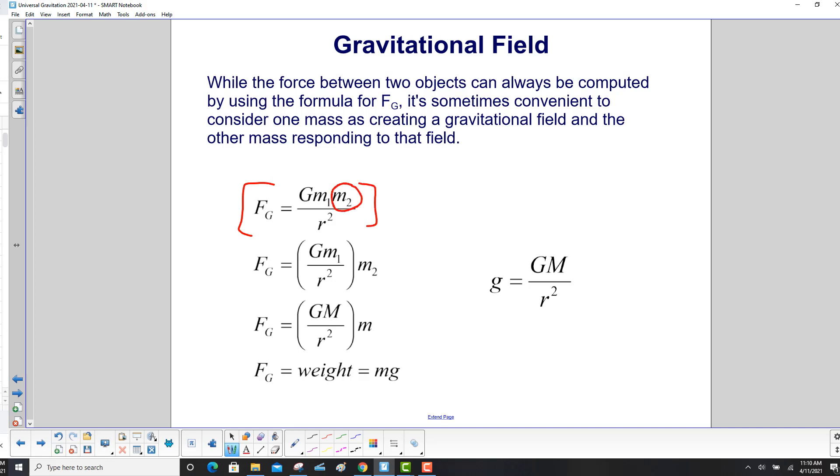So we start with the equation here, and then we pull out this M2 over here. And we're going to say that M1 is creating a gravitational field. So it's right over here all by itself.